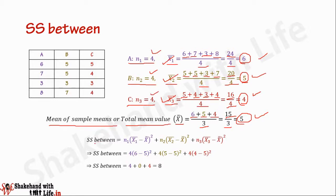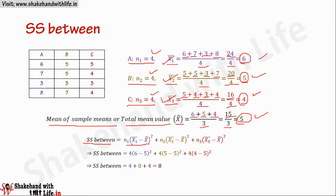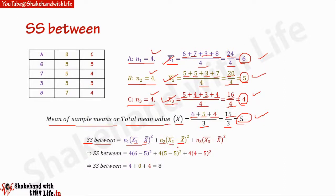Now we calculate the sum of squares for variance between the samples, or S between. S between equals the squared deviation of the mean of sample 1 from the total mean: n1 multiplied by (x1 bar minus x double bar) squared, plus n2 multiplied by (x2 bar minus x double bar) squared, plus n3 multiplied by (x3 bar minus x double bar) squared.